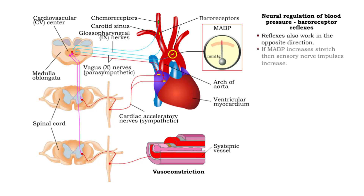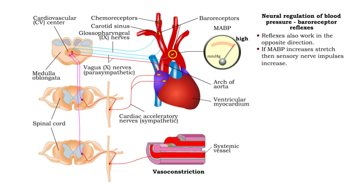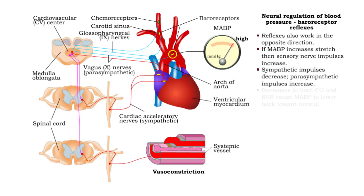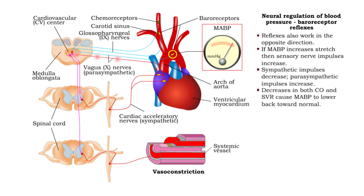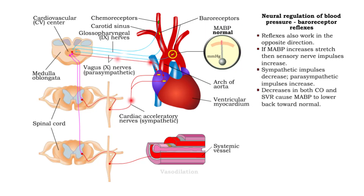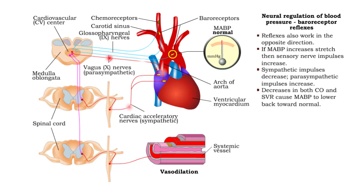Baroreceptor reflexes also work in the opposite direction. An increase in blood pressure causes greater stretch, sending more impulses to the cardiovascular center. The response is decreased cardiac output and systemic vascular resistance, lowering blood pressure toward normal.